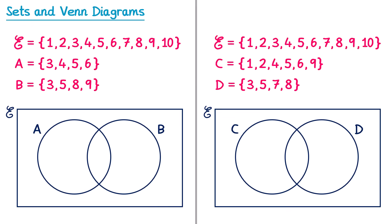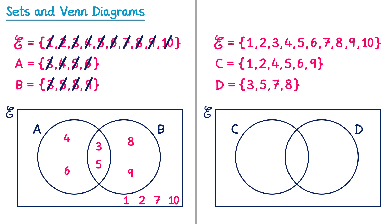Here are two questions for you to try. For the first question, the numbers 3 and 5 are in both sets, so they go in the middle. The numbers 4 and 6 are just inside set A, so they go on the left. The numbers 8 and 9 are only in set B, so they go on the right. So far we've placed 3, 4, 5, 6, 8, and 9, so we're missing 1, 2, 7, and 10. These go outside of the circles but still inside the rectangle. That completes the first Venn diagram.